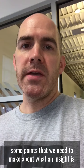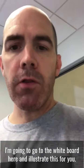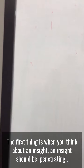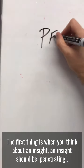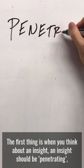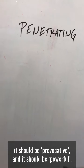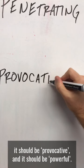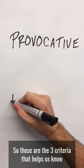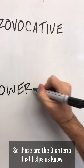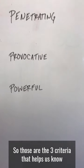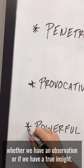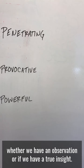There are a couple things we need to establish about what an insight is. I'm going to go to the whiteboard to illustrate this. When you think about an insight, it should be penetrating, it should be provocative, and it should be powerful. Those are the three criteria that help us know whether we have an observation or a true insight.